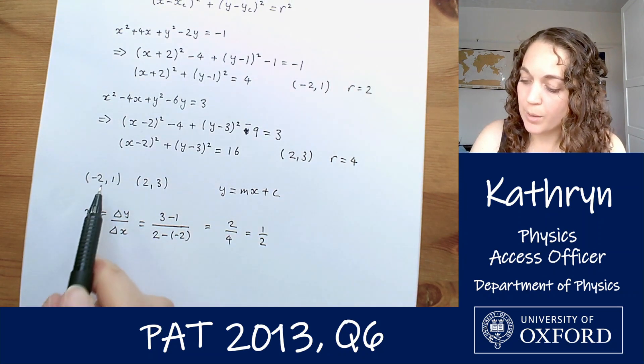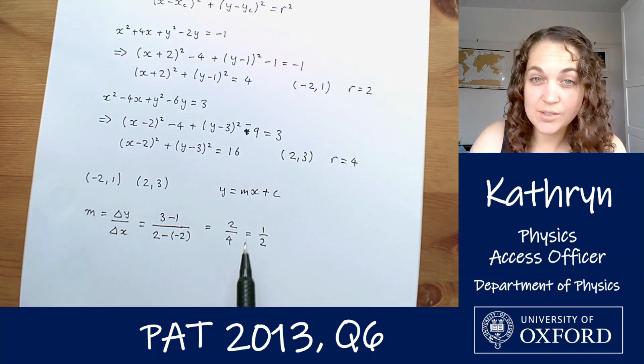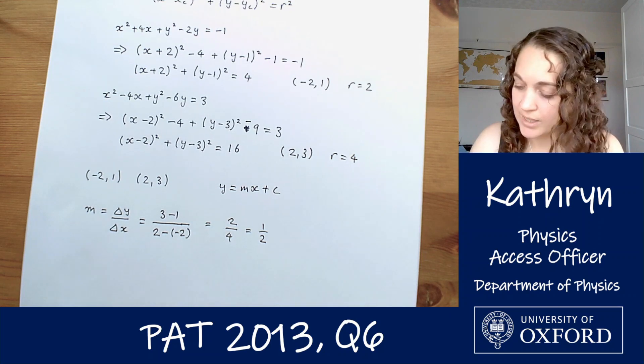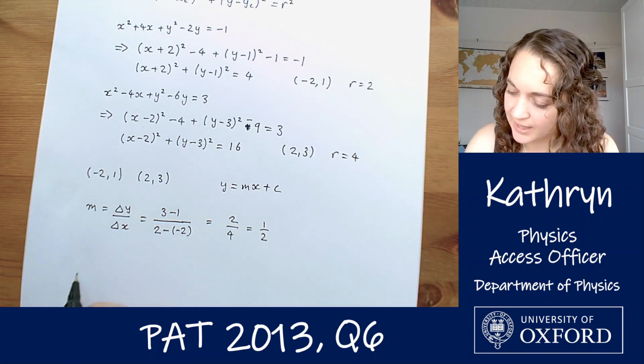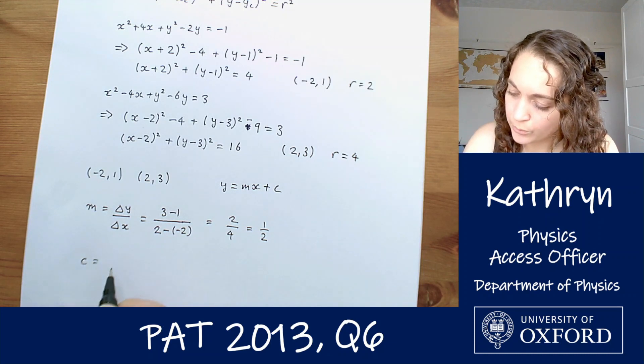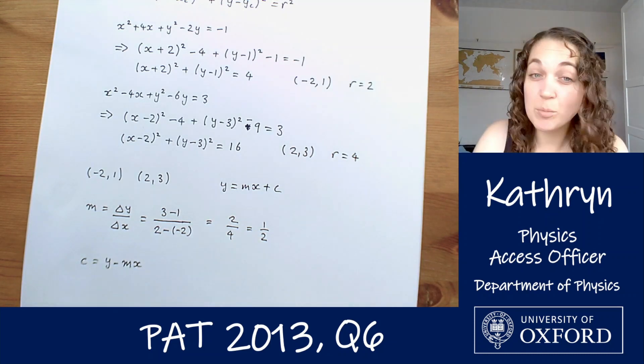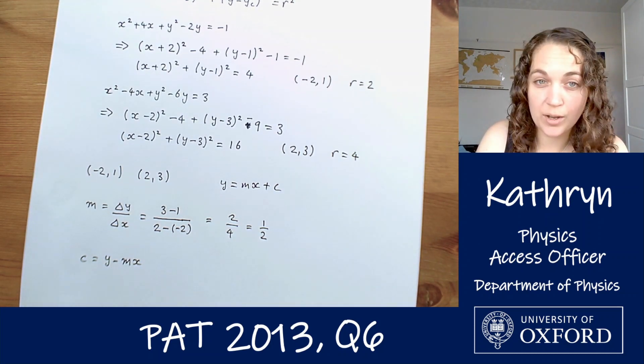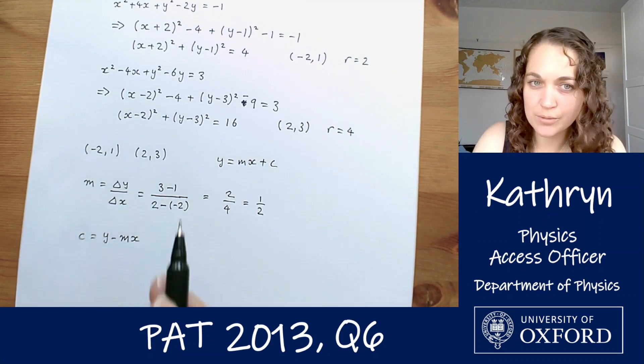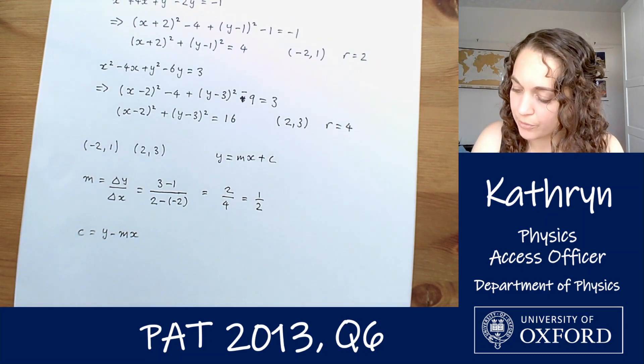We've got points and we've got our gradient so we can work out c, the y intercept. So if we just rearrange that, we can see that c equals y minus mx, and we can use any point we like to substitute into that and find our y intercept. Let's use this one, x equals 2, y equals 3.